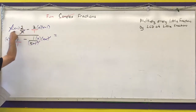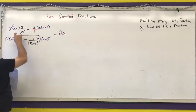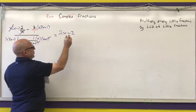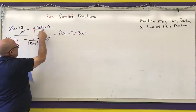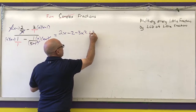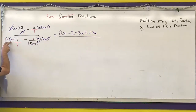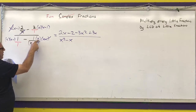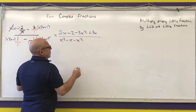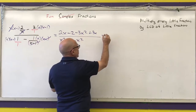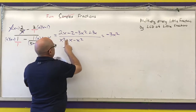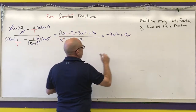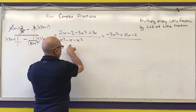In the numerator I have 2 times x, which is 2x. Then 2 times negative 1 is minus 2. Negative 3x times x is negative 3x squared, and negative 3x times negative 1 is positive 3x. In the denominator I have x squared minus x, then negative x squared. Combining like terms gives negative 3x squared plus 5x minus 2 over negative x.